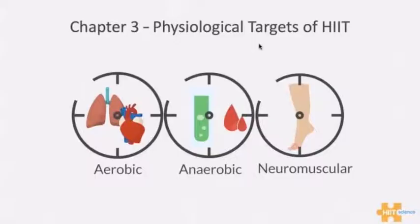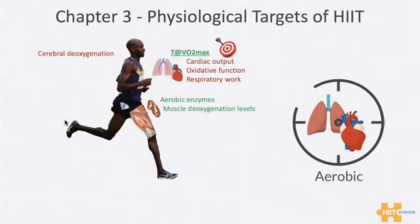This is as simple as we can make it in terms of HIT training. We break it down into three physiological targets: aerobic, anaerobic, and neuromuscular. The cool thing with HIT is you can form the session so that it targets different elements of those three key physiological systems.